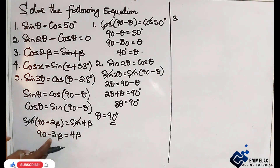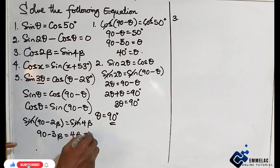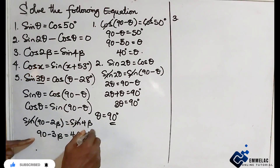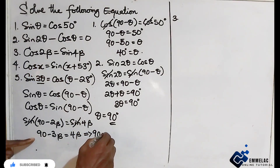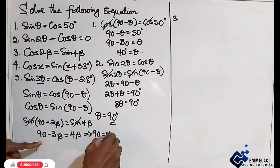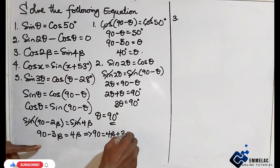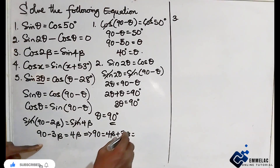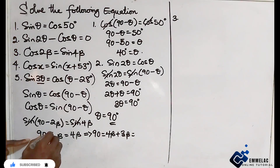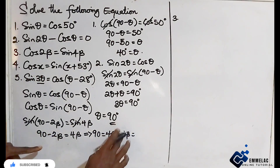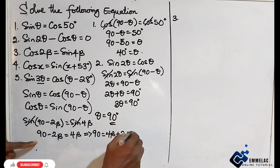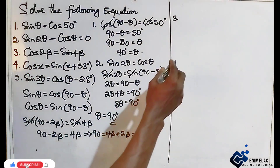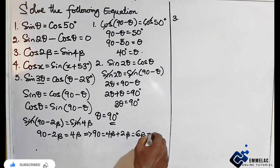Collecting like terms, negative 2 beta moves to the right-hand side and becomes positive. So 90 equals 4 beta plus 2 beta, which gives us 90 equals 6 beta.